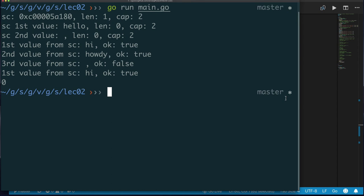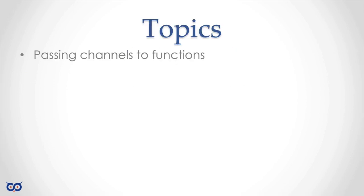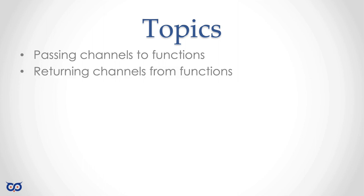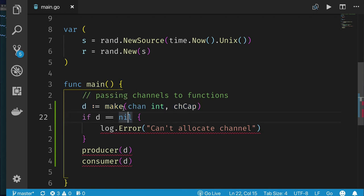That's it for lecture two — no exercise for this lecture either. Welcome to section 7 lecture 3. We'll look at passing channels to functions: is it a shallow copy or a deep copy? And we'll look at returning channels from functions.